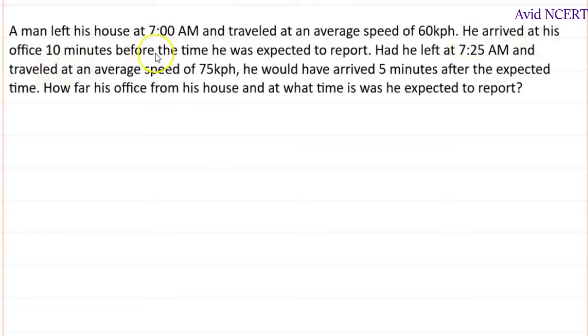He arrived at his office 10 minutes before the time he was expected to report. Had he left at 7:25 a.m. and travelled at an average speed of 75 km per hour, he would have arrived 5 minutes after the expected time. So how far is the office from the house and at what time is he expected to report?